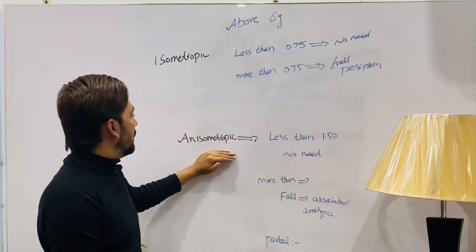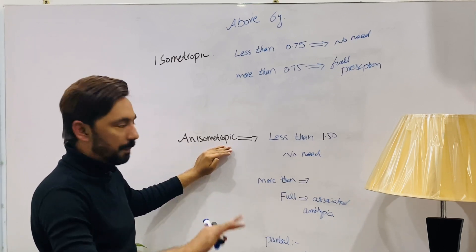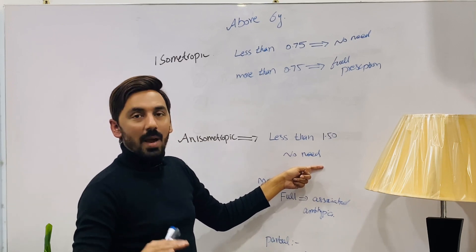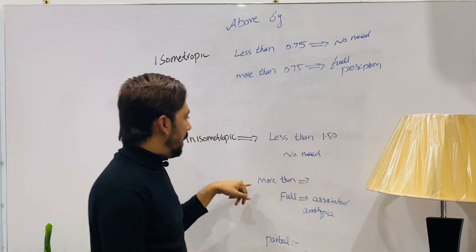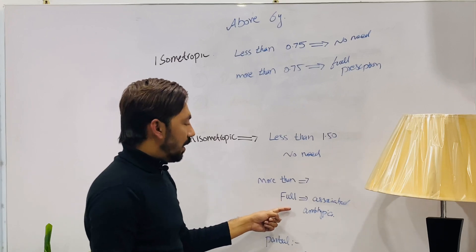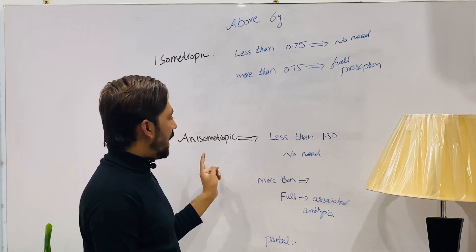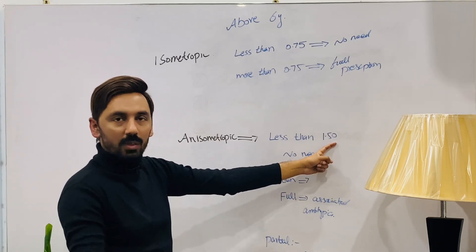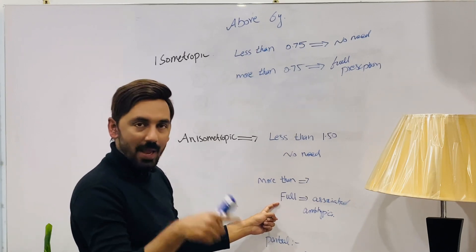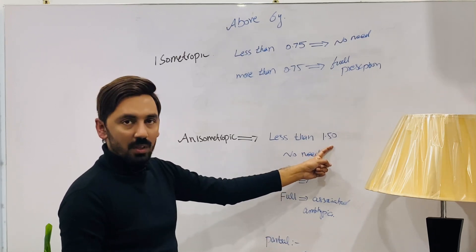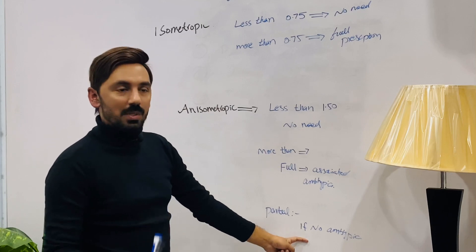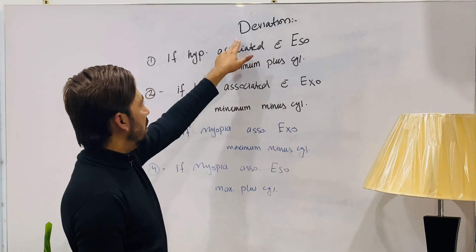For anisometropic astigmatism in the six-years-and-above group: if anisometropia is 1.50 diopters or less, no correction is required. If anisometropia exceeds 1.50 diopters and is associated with amblyopia, prescribe full correction. If there is no amblyopia, prescribe partial correction.